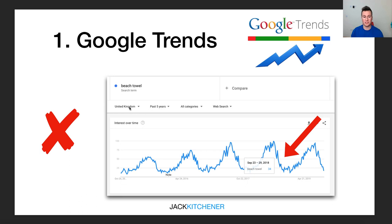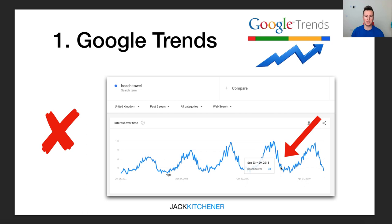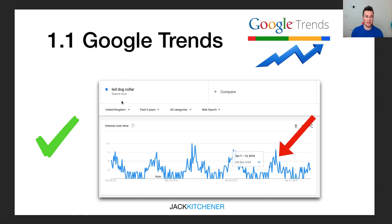Head over to Google Trends, put your product into the search term, and make sure you're looking at a graph over the past five years in the countries you want to sell to. Then hover your mouse across the graph and make sure that at the current time, your product is on an upward trend. As this big red X marks here, we can see that at the end of September a beach towel is at its lowest popularity rating — which means if you try to sell a beach towel now in the UK, the chances are nobody's going to buy it because it's not a popular search term.